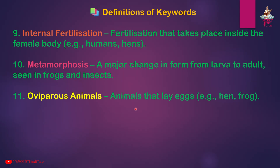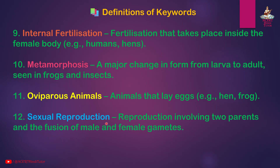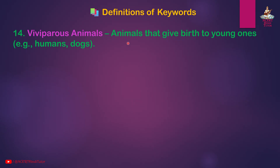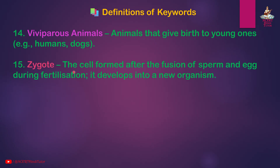Oviparous animals: animals that lay eggs — examples: hen, frog. Sexual reproduction: reproduction involving two parents and the fusion of male and female gametes. Sperms: male reproductive cells or gametes produced in the testes. Viviparous animals: animals that give birth to young ones — examples: humans, dogs. Zygote: the cell formed after the fusion of sperm and egg during fertilization; it develops into a new organism.